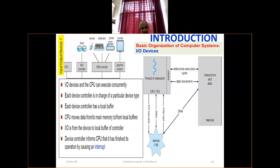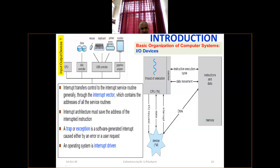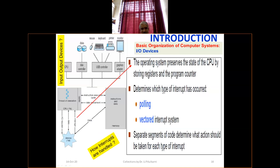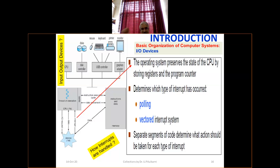We also covered data transfer between I/O devices. We referred to interrupts, and the two ways of transferring data: one is polling and the other is vectored interrupt systems. We mentioned that computer organization deals with that in detail.